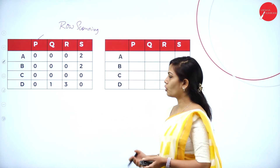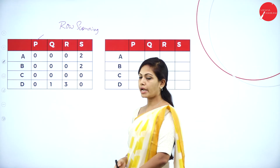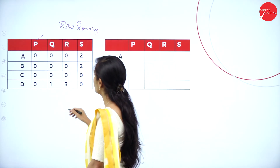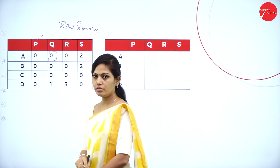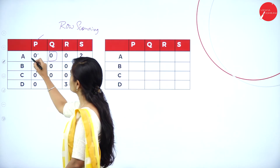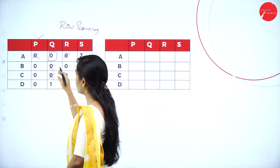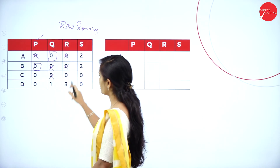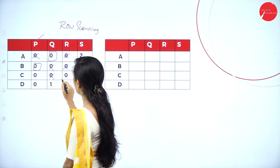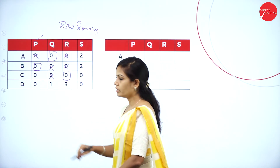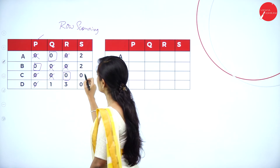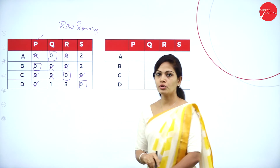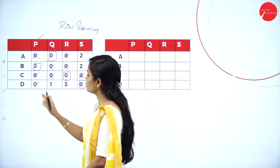Since no zeros were assigned through row and column scanning, we go to diagonal selection. Assign the first zero here — the other zeros in that row and column get cancelled. Assign the next zero diagonally. In the third column, assign this zero and cancel the entire row and column. In the fourth row and column, assign the remaining zero.